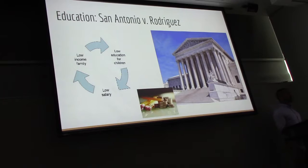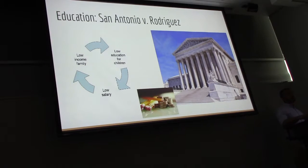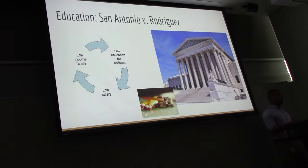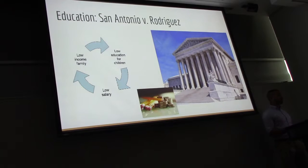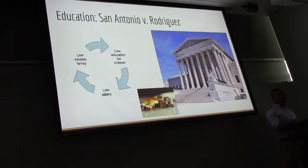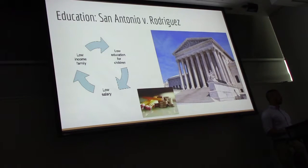The Court also found that because the parents couldn't prove that the funding structure — namely the local tax laws — was set out to be racist or discriminatory, they didn't have a case. This precedent set forward a lot of the inequality we see in our public school system and has limited access to what education provides: college, better-paying jobs, and social mobility.